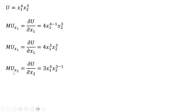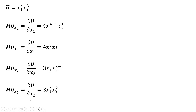And the marginal utility of Good 2: taking the partial derivative of the utility function with respect to Good 2, x subscript 2. The 3 on Good 2 comes down in front. We subtract 1 from that exponent, and the 3 minus 1 in the exponent simplifies down to 2. That is the marginal utility of Good 2.